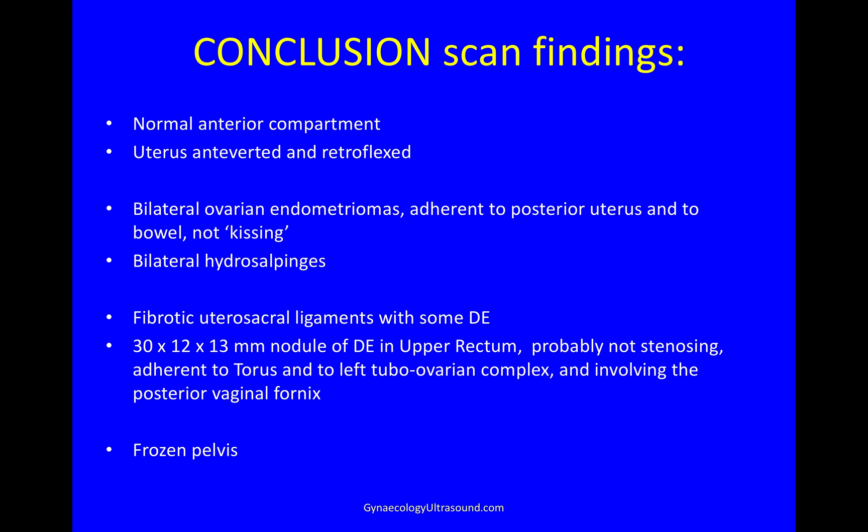In conclusion: in the scan there's a normal anterior compartment. The uterus is antiverted and retroflexed. There are bilateral ovarian endometriomas which are adherent to the posterior uterus and to the bowel but not kissing. Bilateral hydrosalpinges. The utero-sacral ligaments are fibrotic with some deep endometriosis. There's a nodule of deep endometriosis in the upper rectum, probably not stenosing. It's adherent to the torus and to the left tubo-ovarian complex and involving the posterior vaginal fornix. And the pelvis is frozen.